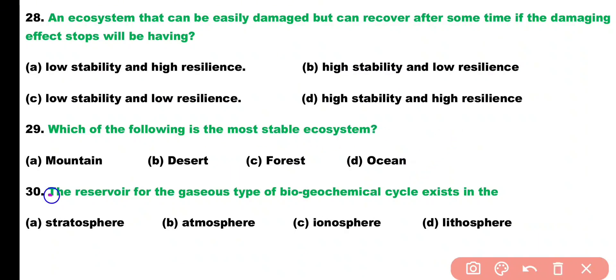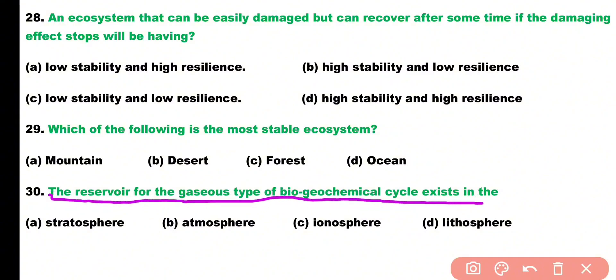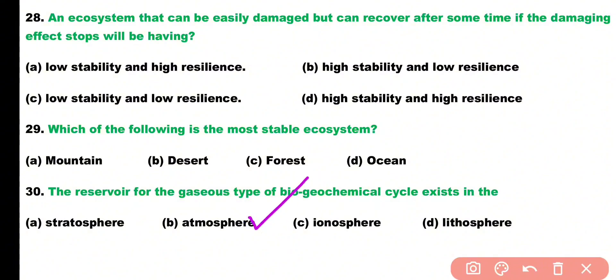Question number thirty. The reservoir for the gaseous type of biogeochemical cycle exists in: the stratosphere, atmosphere, ionosphere, or lithosphere? Correct answer is option B. The reservoir for the gaseous type of biogeochemical cycle exists within the atmosphere.